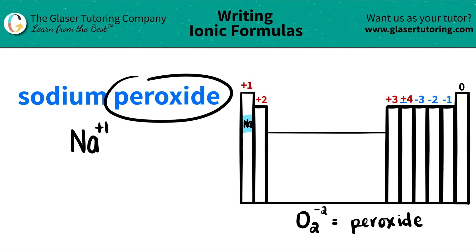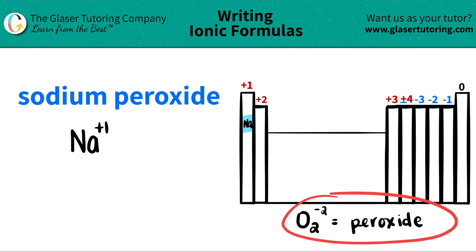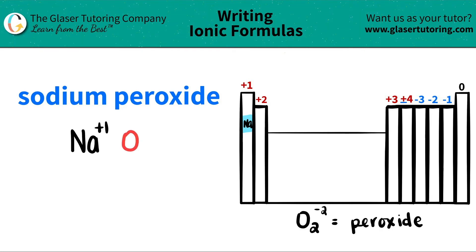Next is peroxide. I do see that's an -ide ending, so maybe it's a non-metal on the periodic table, but if you look for something that starts with 'perox' — maybe like 'peroxium' — you won't find it. So if you don't find it, that means peroxide is a polyatomic ion. You need to memorize these polyatomic ions. Use flashcards, do whatever you've got to do to know that peroxide is O2 with a negative two charge.